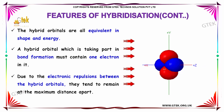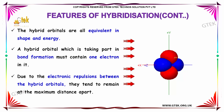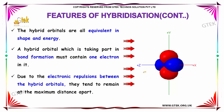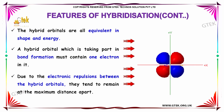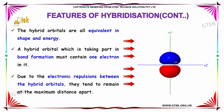A hybrid orbital which is taking part in bond formation must contain one electron in each. Due to the electronic repulsion between the hybrid orbitals, they tend to remain at the maximum distance apart.